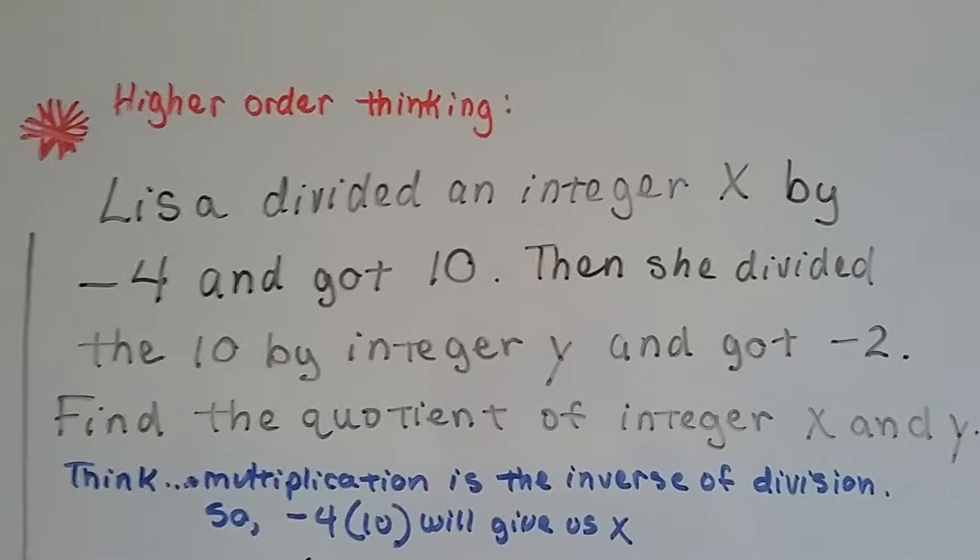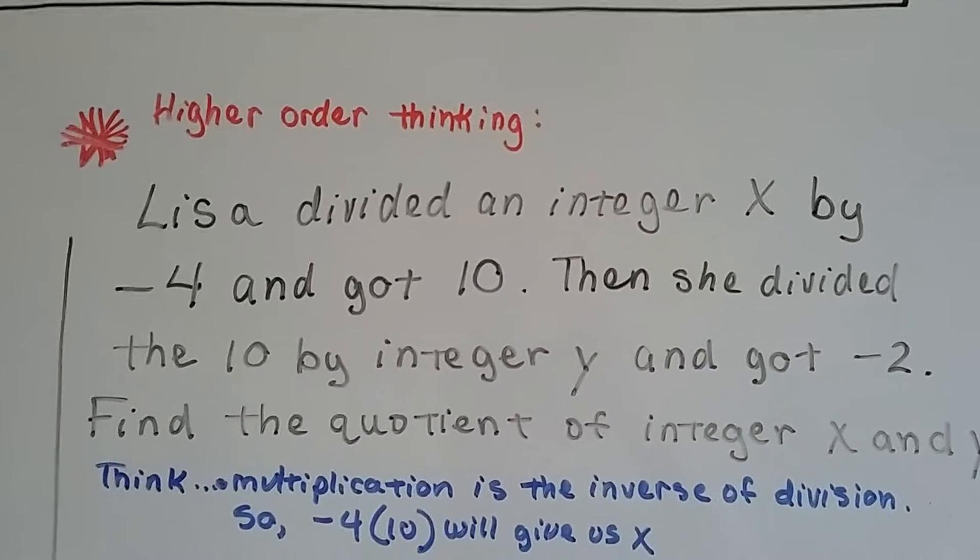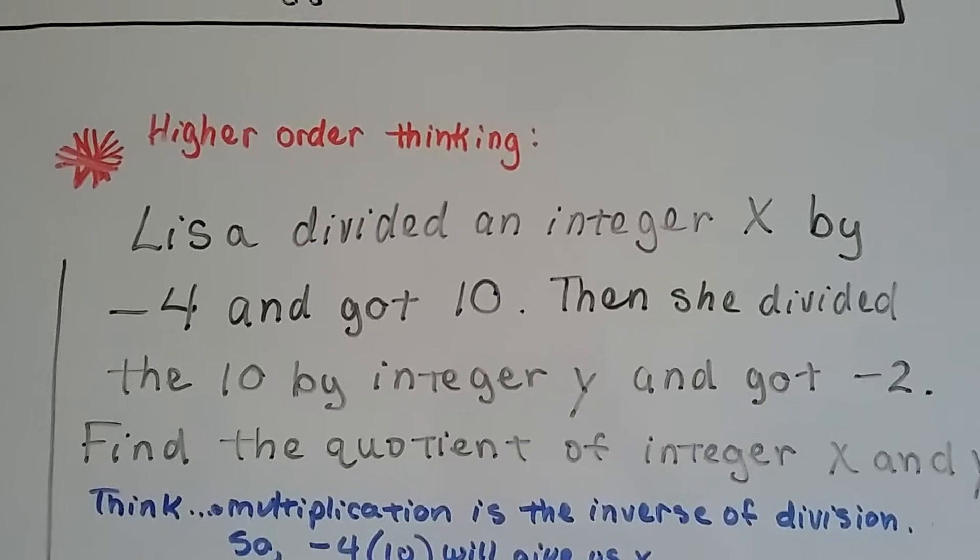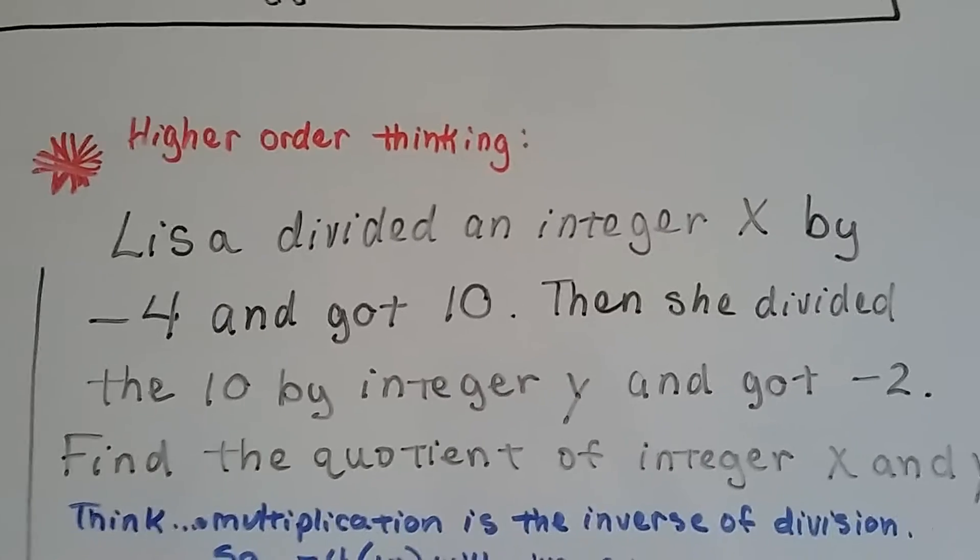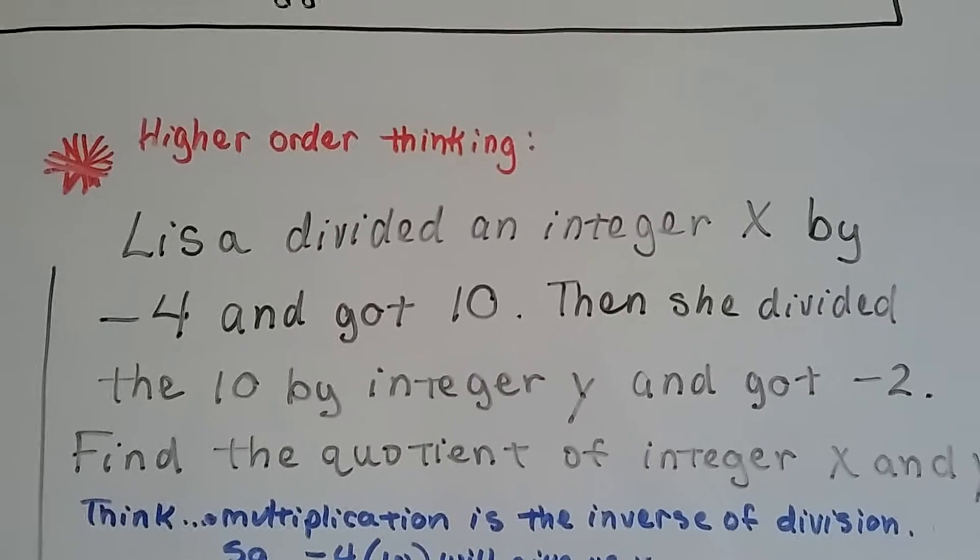Lisa divided an integer x by negative 4 and got 10. Then she divided the 10 by integer y and she got a negative 2.